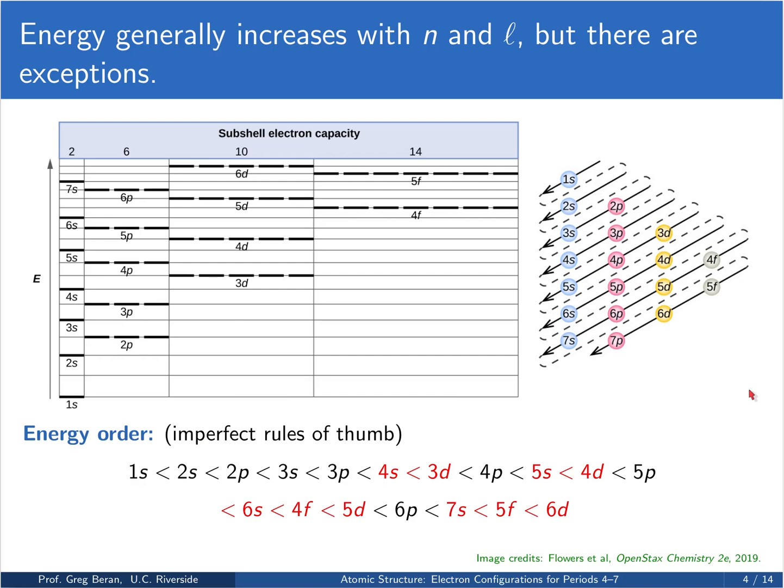Now as we'll see, this sequence of orbitals is a good starting point, but there are still a number of nuances and exceptions that are going to complicate this further as we get into specific examples of electron configurations.